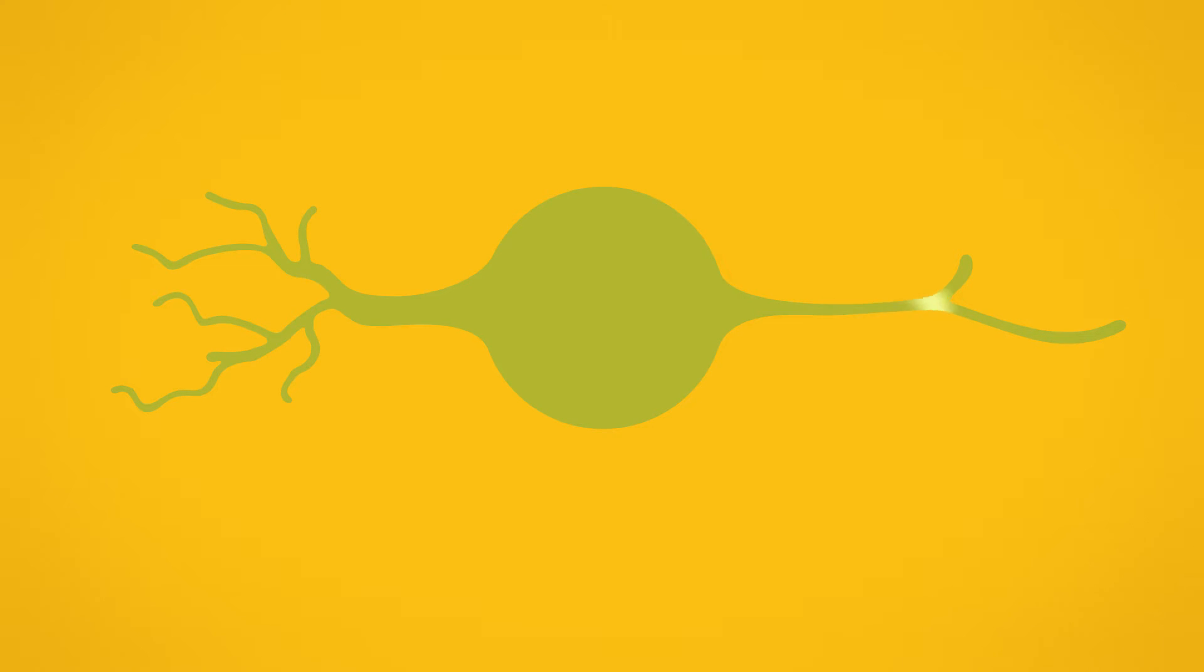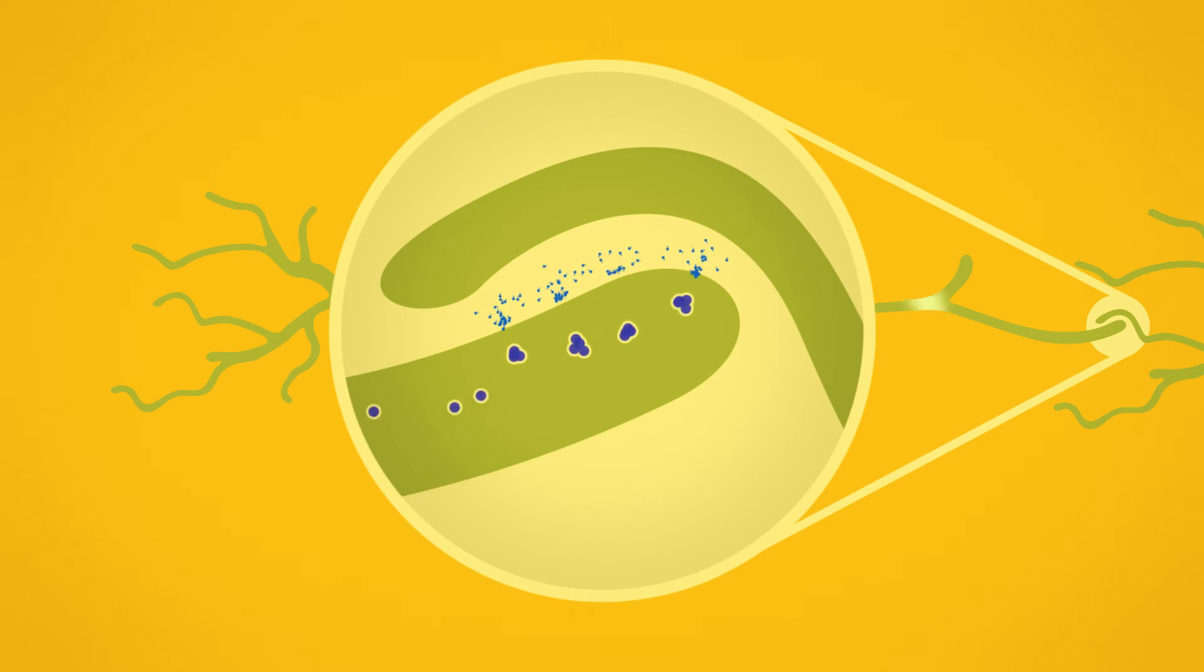Axons carry electrical pulses from the cell's body to where they connect with dendrites. The pulses cause neurotransmitters to be released from the axon, which cross the tiny gap and are detected by receptors on the dendrite surface.